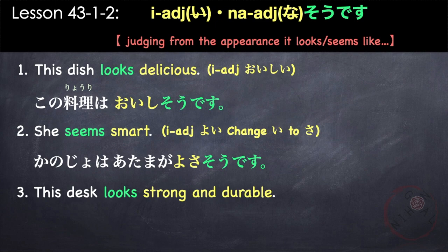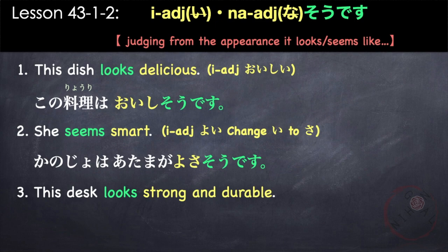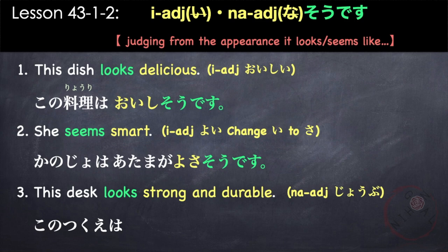Another example: 'This desk looks strong and durable.' Strong and durable is joubu — this is a na-adjective. Kono tsukue wa joubu so desu. Just remove na: Kono tsukue wa joubu so desu.